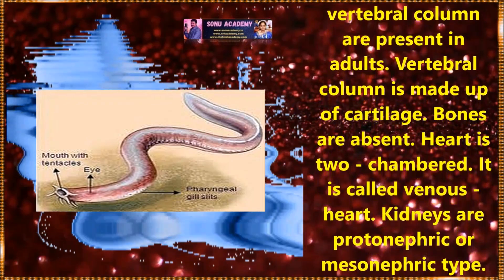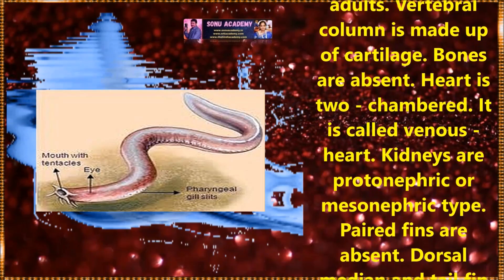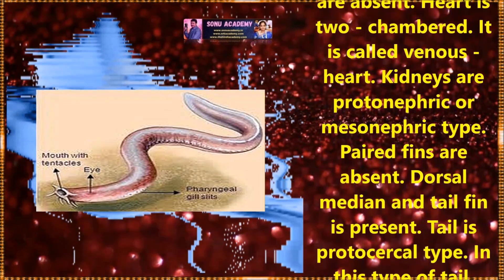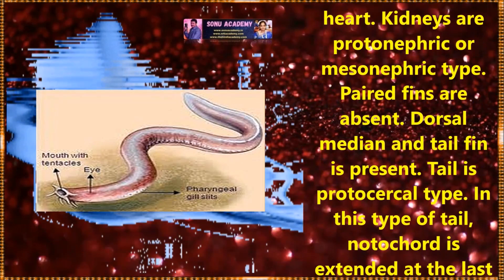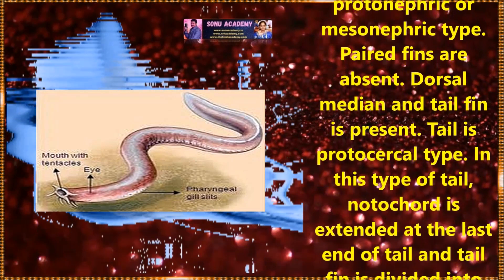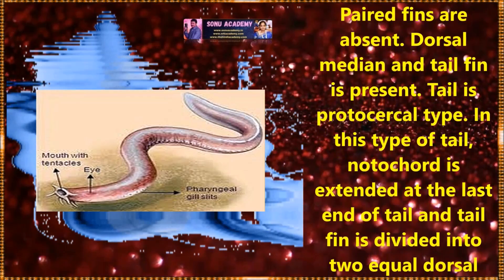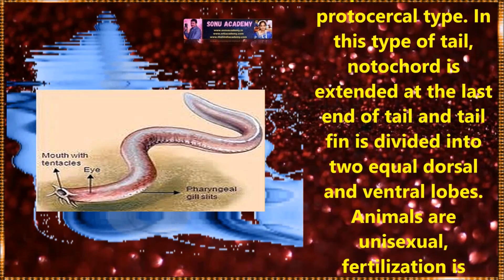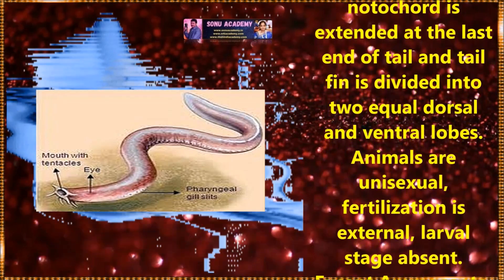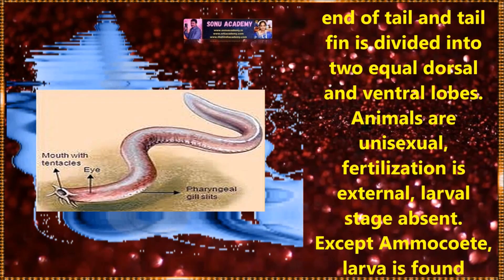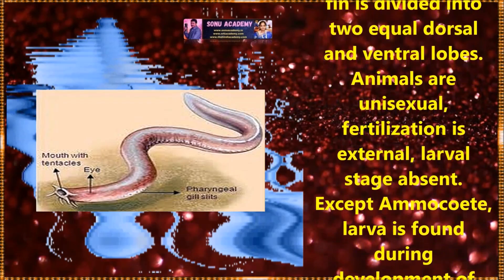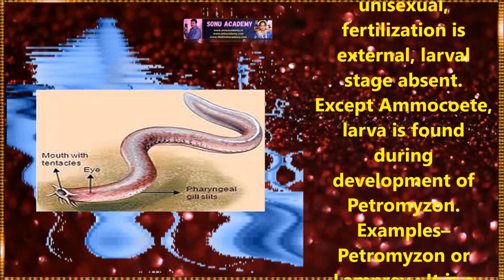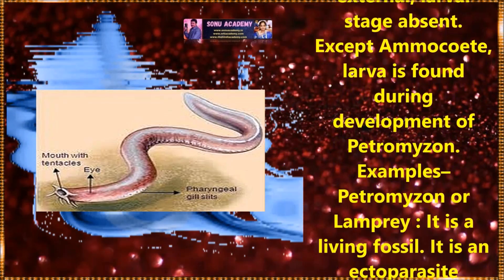Kidneys are protonephric and mesonephric type. Paired fins are absent in these fishes; dorsal, median, and tail fins are present. Tail is protocercal type. In this type of tail, notochord is extended to the last end of the tail and the tail fin is divided into two equal dorsal and ventral lobes. Animals are unisexual and fertilization is external.